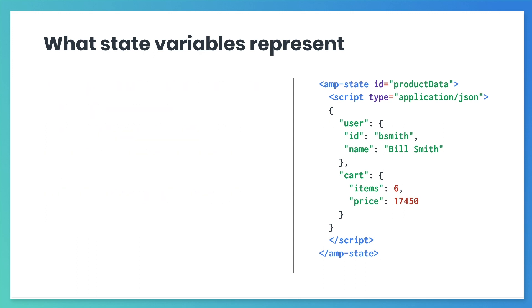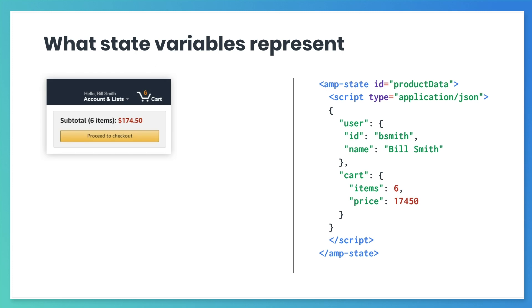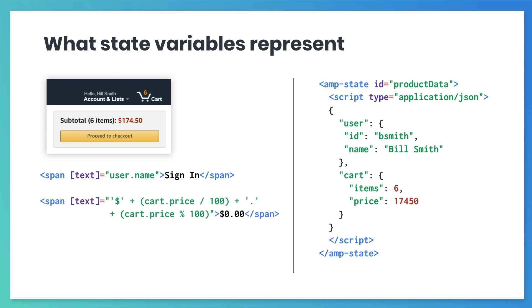Here's an example of how you'd make this work as a web developer. Let's say that our site has a message that greets the customer by name and a shopping cart that shows the number of selected items and maybe a subtotal section. Our state variables store the logged-in user and the contents of their shopping cart. To make a personalized greeting, we can bind the text value of the greeting to ask users to sign in by default, or to include the user's name if they're logged in. We can bind the text attribute of the subtotal price span tag to show the price of the items in their cart.